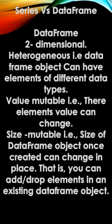DataFrame is two-dimensional. A DataFrame object can have elements of different data types — it is heterogeneous. For example, you can have integer values in the second column and string type values in the third column.